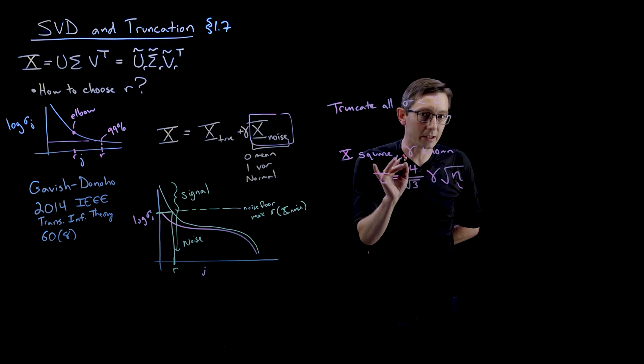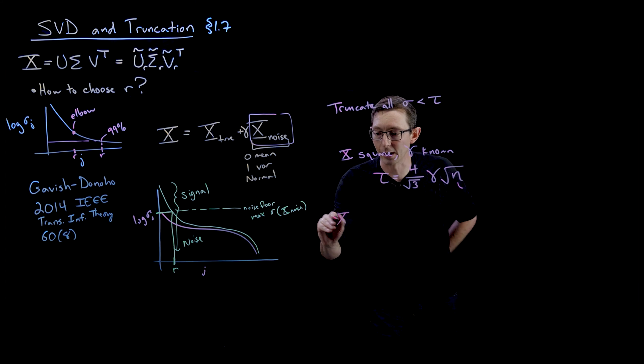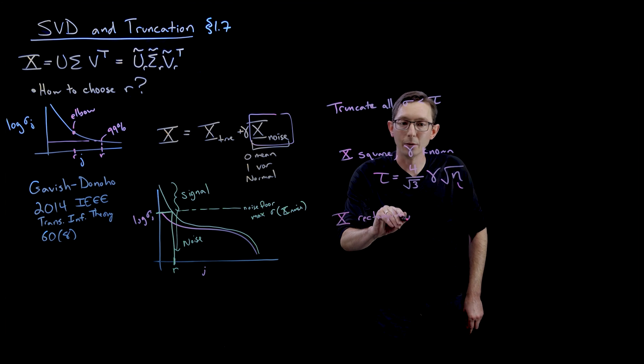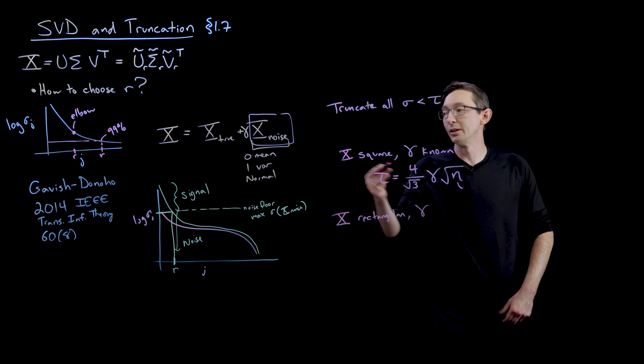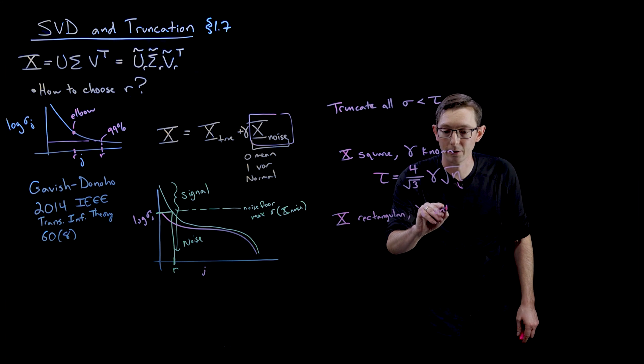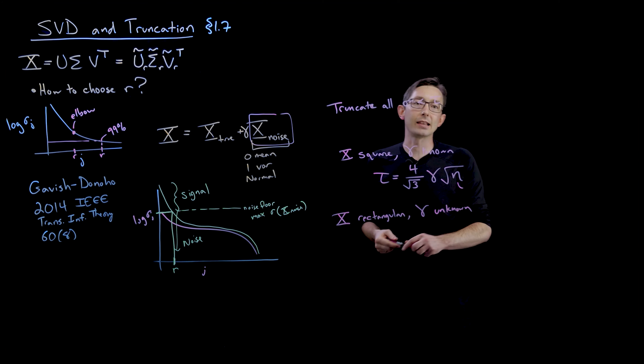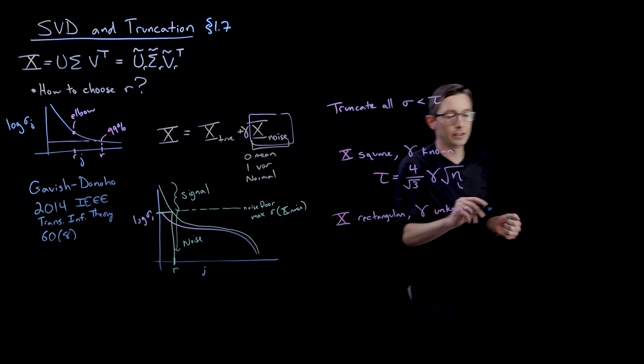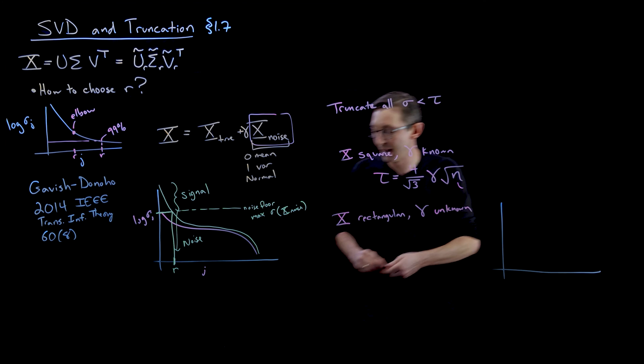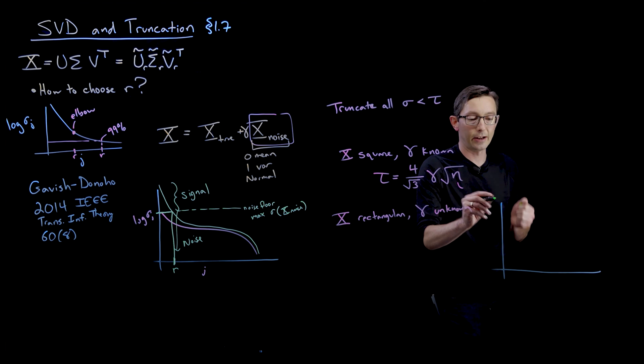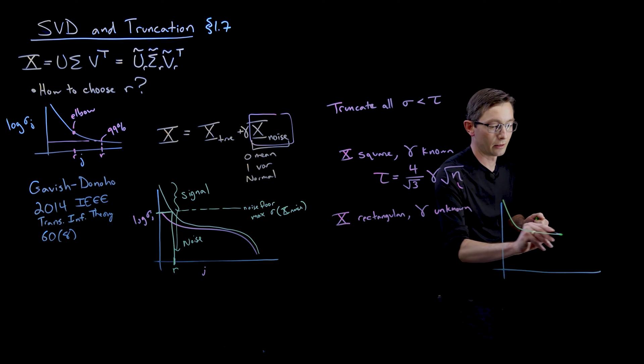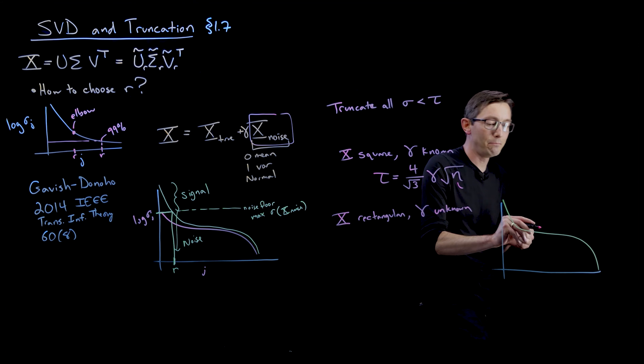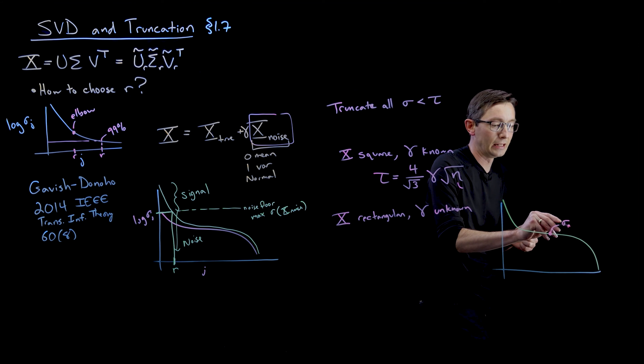But what's really useful about this is that they go on to solve the case where X is rectangular and we don't know gamma. We just have a noisy matrix, but we don't know how much noise. So gamma unknown. And in this case, they have a really clever approach where essentially what they do is, all they have is measurements of a singular value distribution that maybe looks like that. And so what they do is they take the median singular value, sigma median.